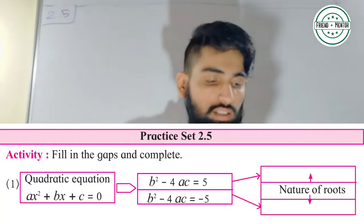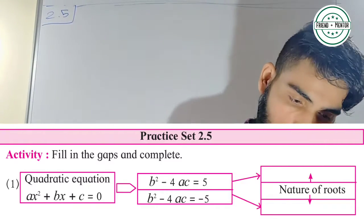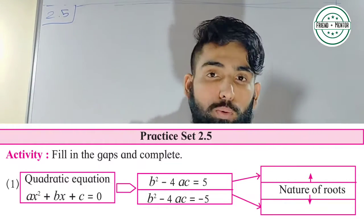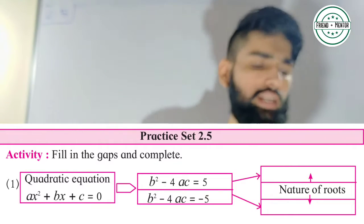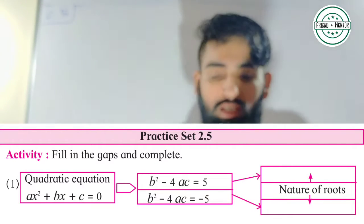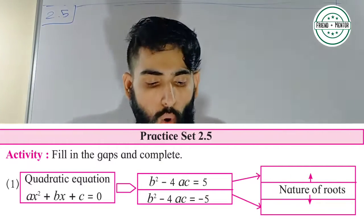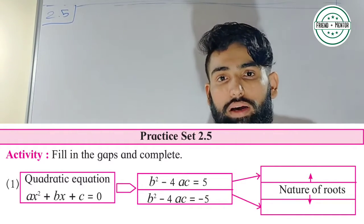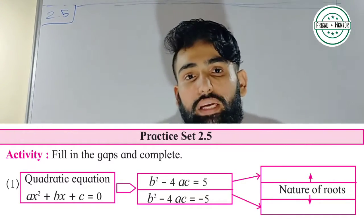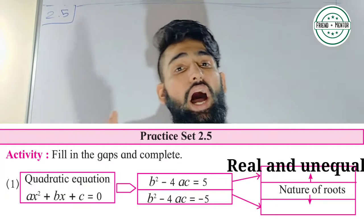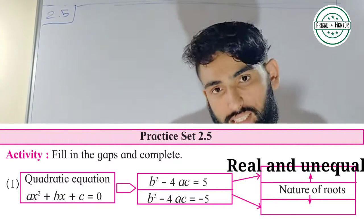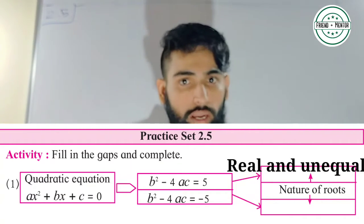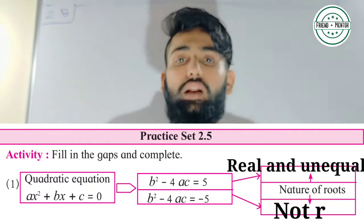Quadratic equation is x² + bx + c = 0, where they have discriminant with two different values. Discriminant is b² - 4ac with a value of 5. So if discriminant is 5, discriminant is greater than 0 — what is nature? There will be real and unequal roots. In the second case, discriminant is minus 5, so roots will not be real roots.